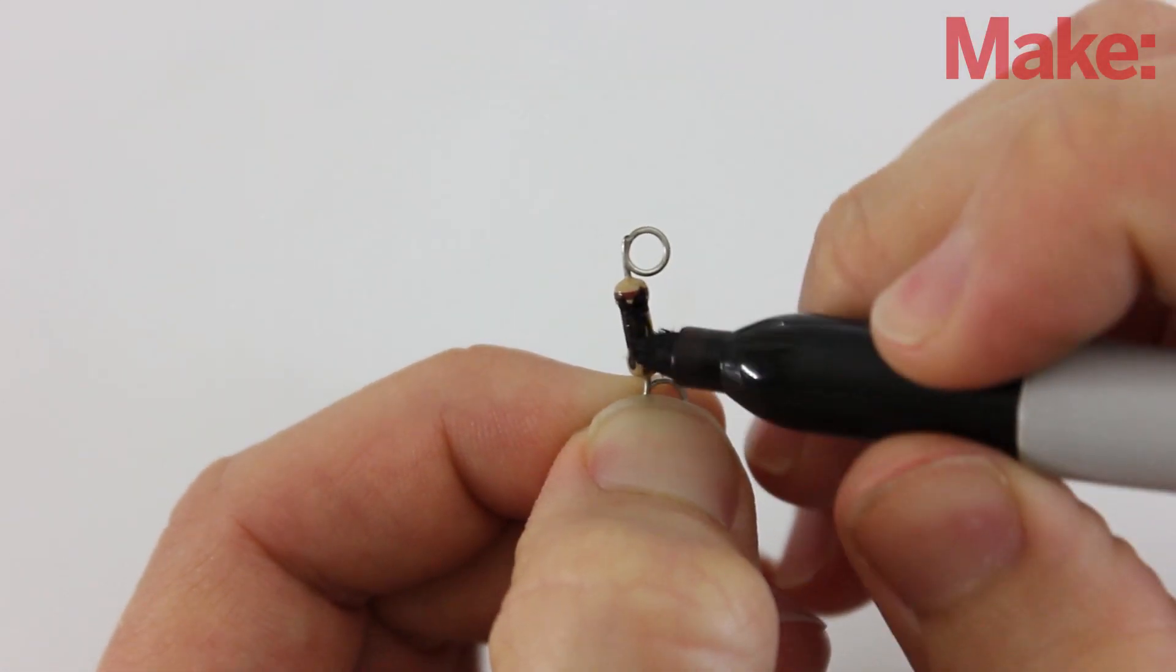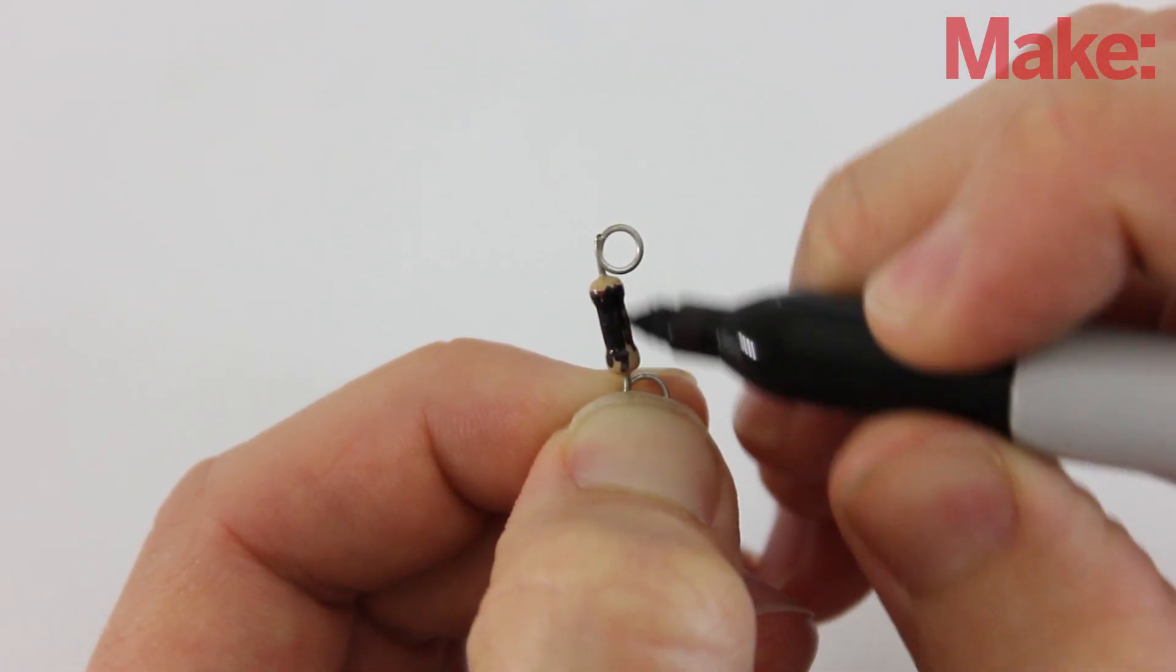If you want to make the resistor key extra secure, you can cover up the color indicator stripes with markers or paint.